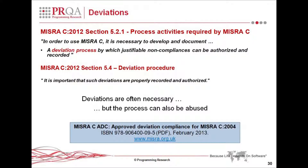The difficulty with deviations is that the process is very open to abuse. This is currently under scrutiny between MISRA and the Japanese motor industry, because of the need to regulate the deviation process more closely. A very recent publication by MISRA — MISRA C-ADC — is the first stage in tackling the regulation of deviations. It is a brief document available from the MISRA website, referring to principles for how deviations can be sensibly applied to coding rules.